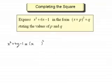And what we do is we always look at the term in x, in this case plus 6x. Then we look at the number in front of the x term, often called the coefficient of x, in this case plus 6.